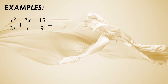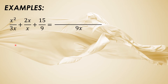Let us have another example: x squared over 3x plus 2x over x plus 15 over 9. As you can see, we don't have the same denominators here. So let us find the LCD of 9 and 3. We have the LCD of 9 for the 3 and 9, and then just copy the variable x. So the LCD of these three rational expressions will be 9x.